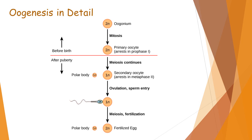Consequently, fertilization results in formation of an ovum and a second polar body. The sperm nucleus then fuses with the nucleus of the ovum, forming a fertilized egg or zygote. This is the detailed plan of oogenesis.